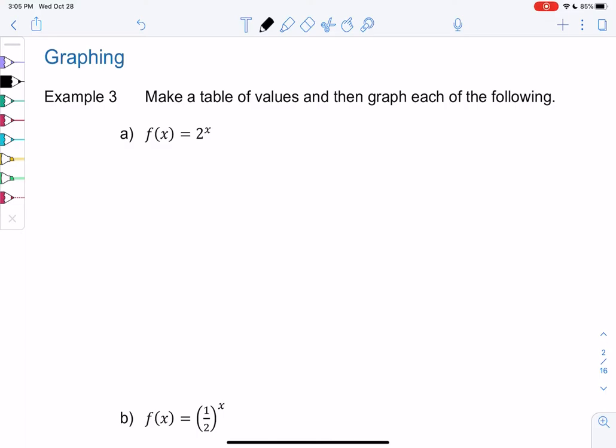So f of x is 2 to the x, and I'll make a table. For x, we can choose anything. I'm going to choose negative 2, negative 1, 0, 1, 2, and 3, just to get a lot of points. We might not need this many in the future.